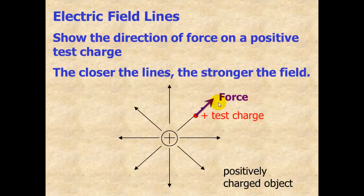Because of this, all these electric field lines are pointing out. No matter where we put this positive test charge, it's always going to be experiencing an outward force.